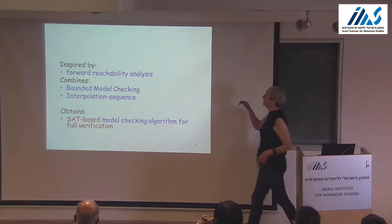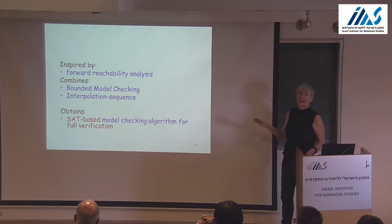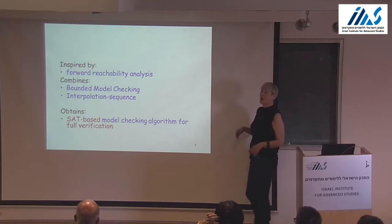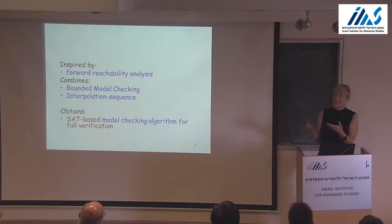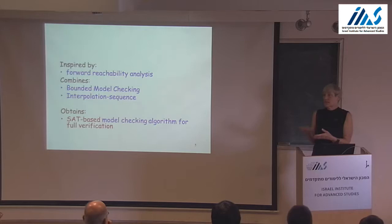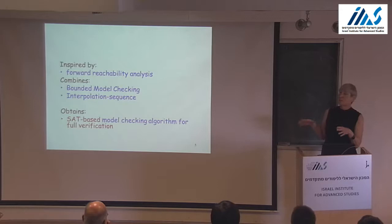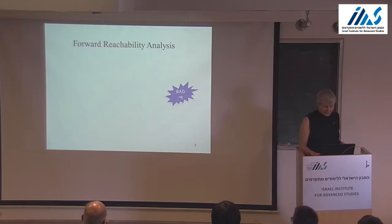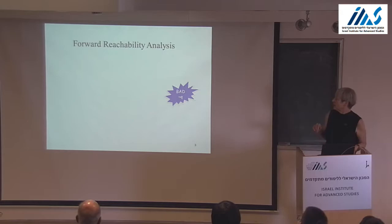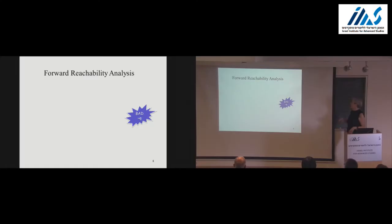We are going to alternate between bounded model checking — which, as before, takes the role of finding bugs — and interpolation sequences, which will hold the set of states. Yesterday we had a question of why we do not hold sets of states, and we said it's impossible if the only question we ask is satisfiability. But now we will say we can use propositional formulas to represent sets of states and eventually conclude a fixed point — that we saw all the reachable states in the system.